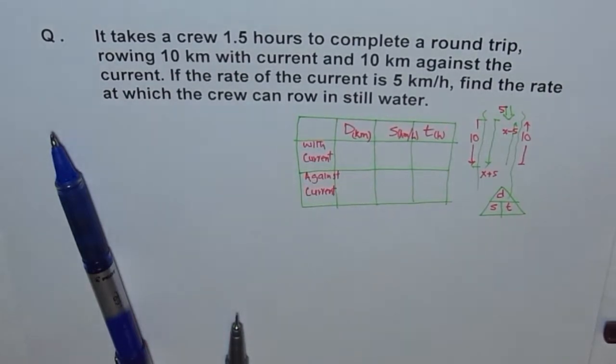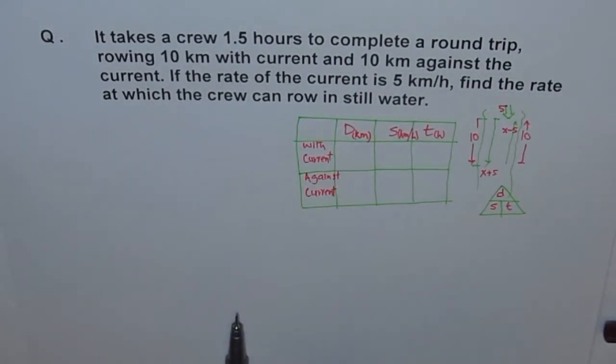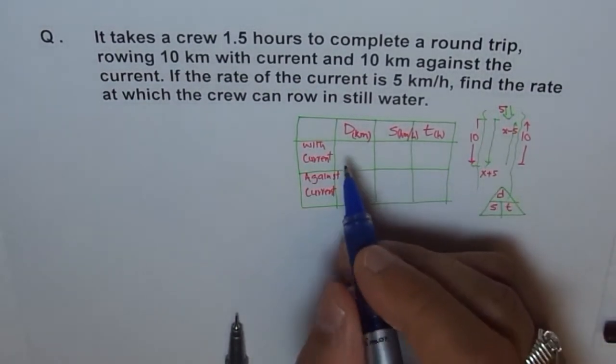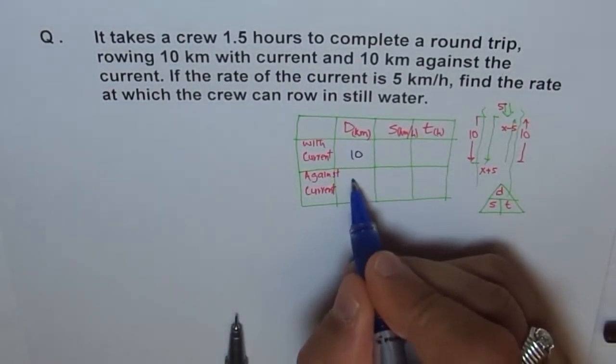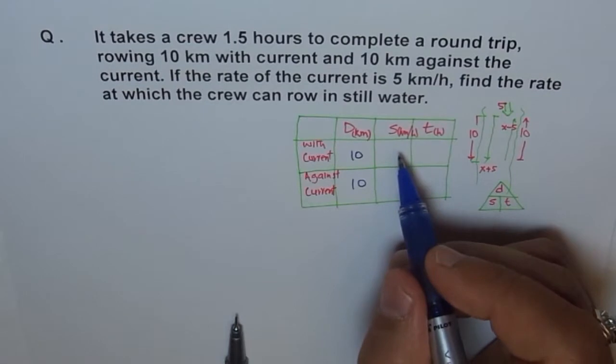So, let me write with current and against current. Now, and then, let's get into the details of this. So, both ways, you cover a distance of 10 kilometers. That is very simple.